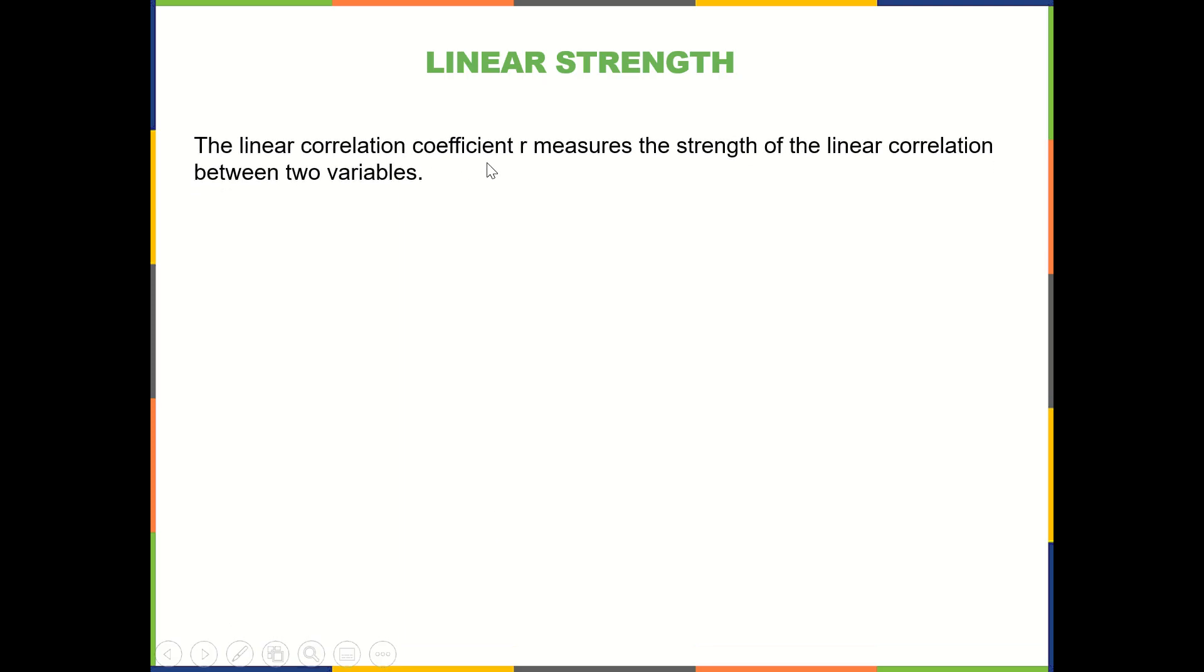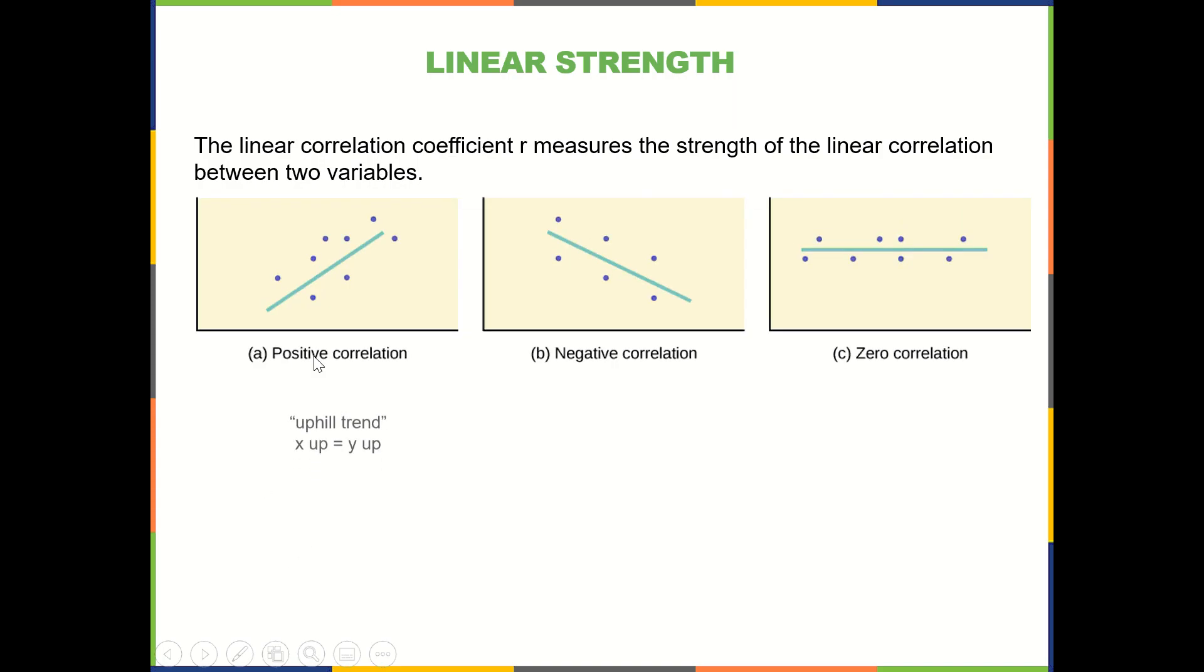The linear correlation coefficient, r, measures the strength of the linear correlation between two variables. So when we're making a trend line, before we put that trend line on there, we want to determine if there's enough linear strength.